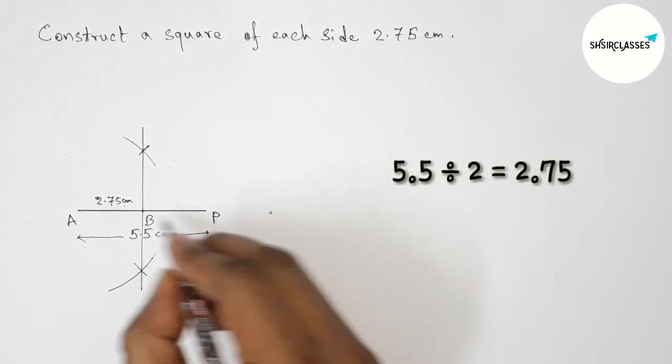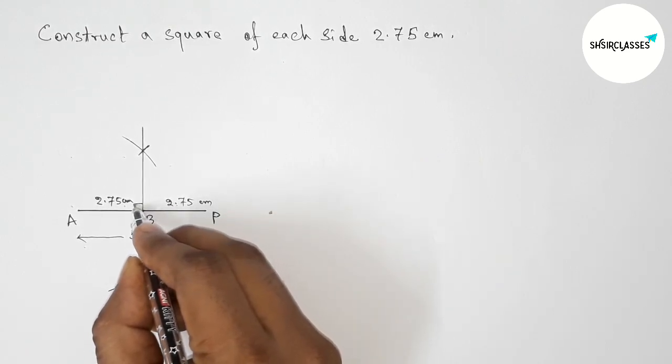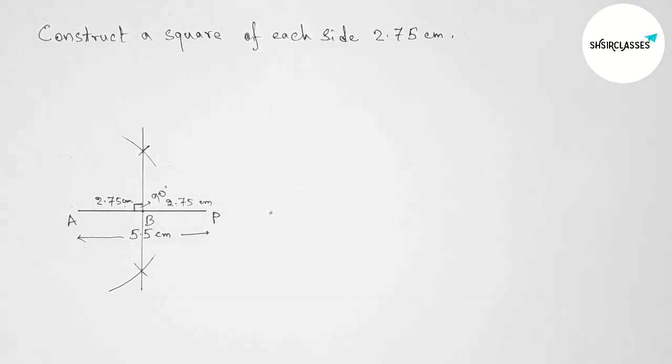So now AB is 2.75 centimeter, BP also 2.75 centimeter, and this is obviously a 90 degree angle.